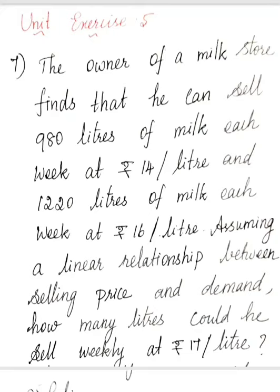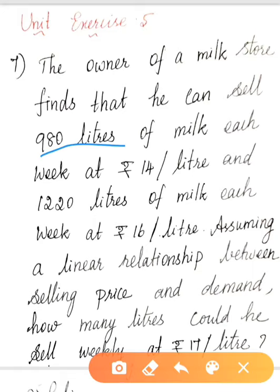Unit exercise 5, question number 7. The owner of a milk store finds that he can sell 980 litres of milk each week at Rs. 14 per litre and 1220 litres of milk each week at Rs. 16 per litre. Assuming a linear relationship between selling price and demand, how many litres could he sell weekly at Rs. 17 per litre?